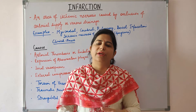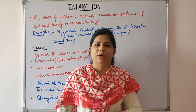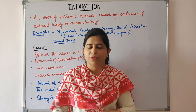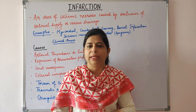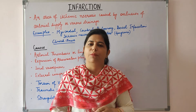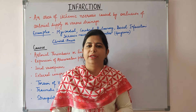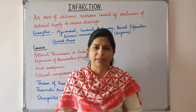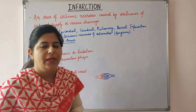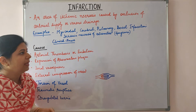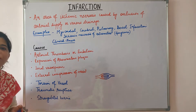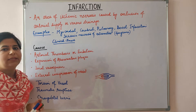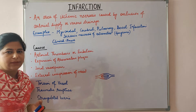Today we are going to study about infarction — the definition, the causes, the types, the morphology of infarct, and various factors influencing the development of infarct. An infarct is an area of ischemic necrosis caused by occlusion of either the arterial supply or the venous drainage.